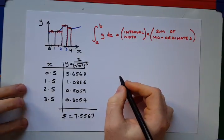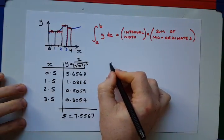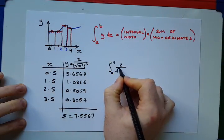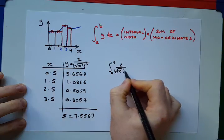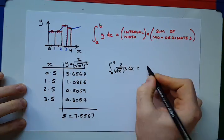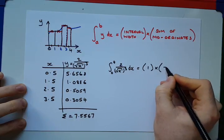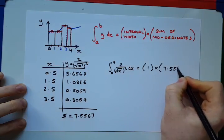So, now, we can use the mid-ordinate rule. So, between the limits of 0 and 4, 2 over the square root of x cubed, with respect to x is equal to 1 multiplied by 7.5567,